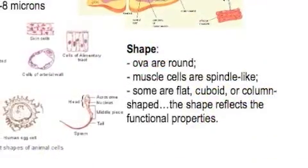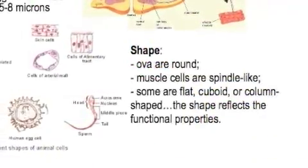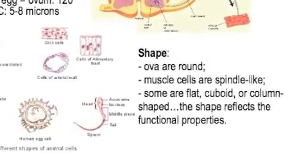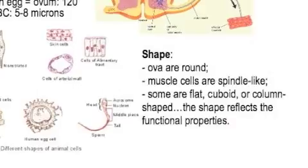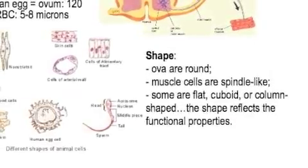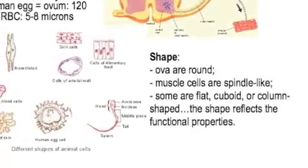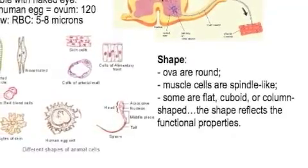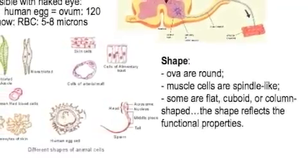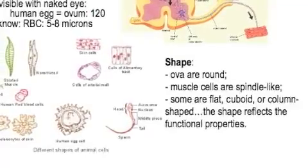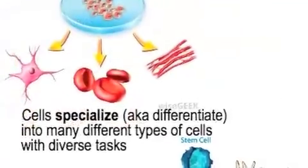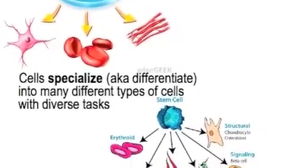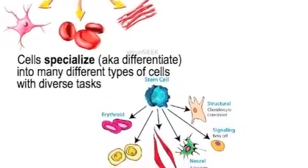Cells come in many shapes. Human eggs are round. Muscles are spindle-like. Others are flat, or cuboidal, or columnar. The shape reflects a cell's functional properties — keep that in mind. It's the same as I said in the beginning: structure will dictate function. As cells develop, they specialize to accommodate what jobs they will have. We call that differentiation.